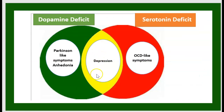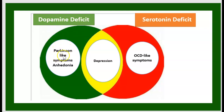Depression is at the intersection between serotonin deficit and dopamine deficit. With dopamine deficit, there are Parkinson-like symptoms — anhedonia. With serotonin deficit, there are OCD-like symptoms. Depression lies between them.